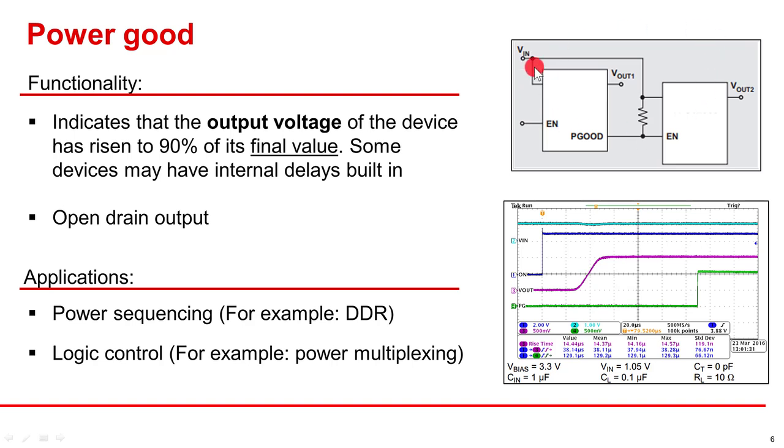As you can see in the top right image, the PG pin is being used to prevent the second device from turning on until the output of the first device is stable. We'll talk more about power sequencing and logic control later on in this presentation.